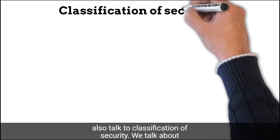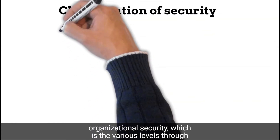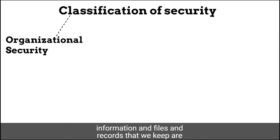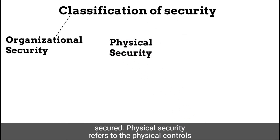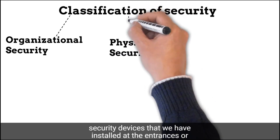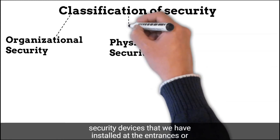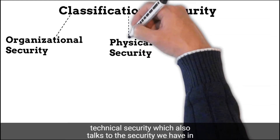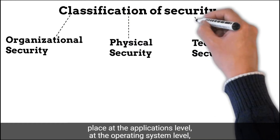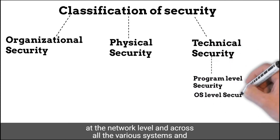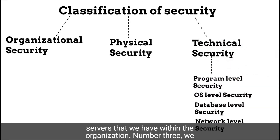I will also talk to the classification of security. We talk about organizational security, which is the various levels through which security is exercised in assuring us that the data, information, files, and records that we keep are secured. Physical security refers to the physical controls we have put in place, starting from security at the gate to security devices installed at the entrances or exits of the organizational building. The last is technical security, which talks to the security we have in place at the applications level, at the operating system level, at the network level, and across all the various systems and servers within the organization.